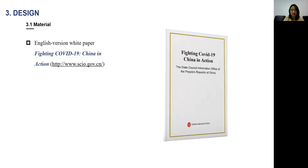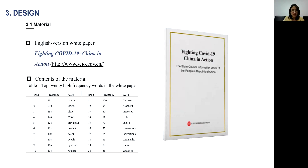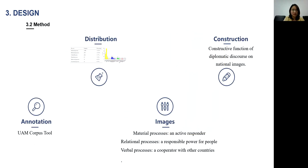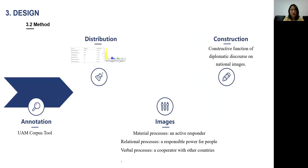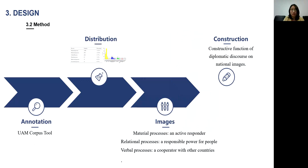The material in our study is the English version white paper 'Fighting COVID-19: China in Action.' The content of the white paper focuses on China, virus, COVID, prevention, etc., which greatly corresponds to the title. The method is divided into two steps: the first is annotation, using UAM Corpus Tool 2; the second is data analysis — first we analyze the polarized distribution of transitivity resources, then we analyze the image constructed by the transitivity mechanism, and finally we summarize the constructive function of diplomatic discourse on national images.